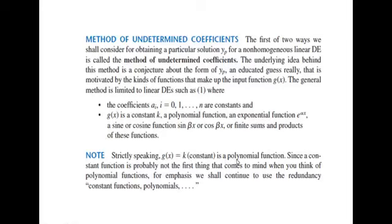Strictly speaking, a constant function is a polynomial of zero degree, so constant functions are zero-degree polynomials. Since a constant function is probably not the first thing that comes to mind when you think of polynomial functions, for emphasis we will continue to use the redundant phrasing 'constant function and polynomial' throughout our discussion.